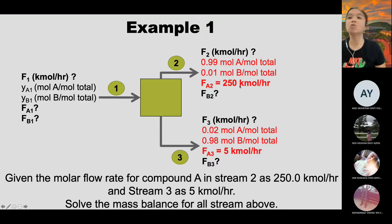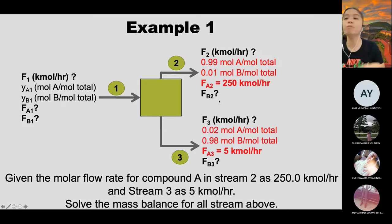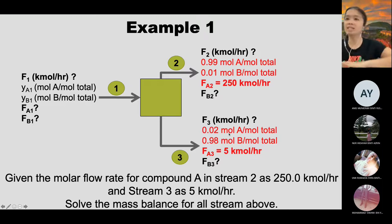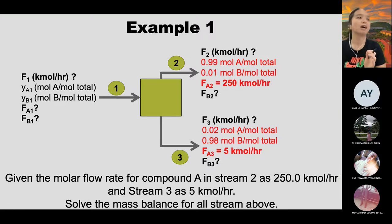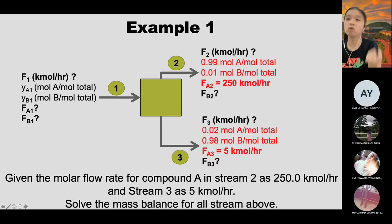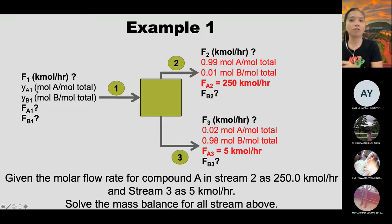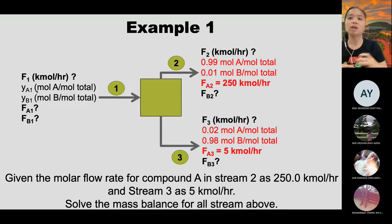Once you know total out for stream 2 and stream 3, you apply overall balance to find total in F1 = F2 + F3. Then knowing total in and compound A, you derive compound B for the feed stream, and from that calculate mole fractions for the feed. After solving all streams, put values in the mass balance table and verify: total stream 1 should equal total stream 2 plus stream 3; compound A in stream 1 should equal compound A in streams 2 and 3 combined.